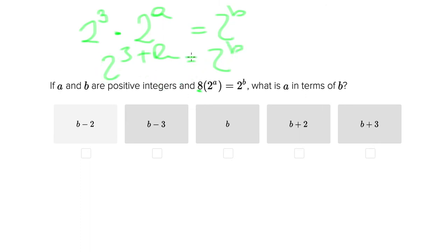And we can even stop paying attention to the base number 2 and just go ahead and simplify this to 3 plus a equals b, since all we're looking for is the value of a in terms of b. And then we would just subtract 3 from each side and end up with a equals b minus 3.